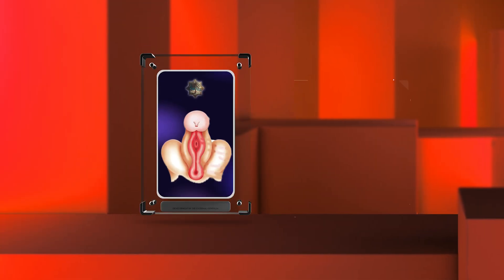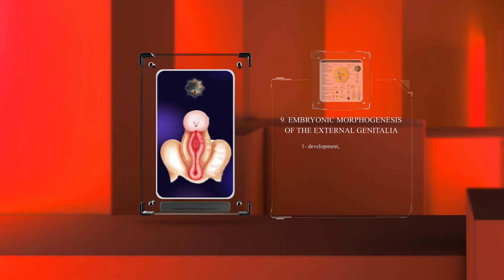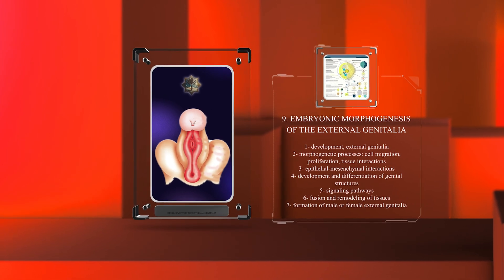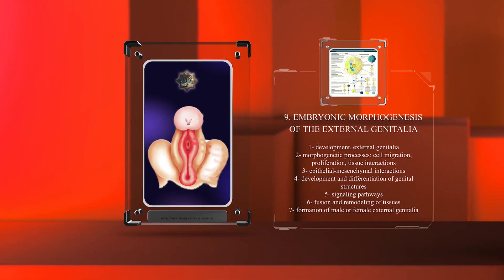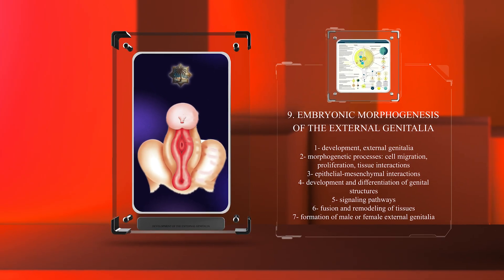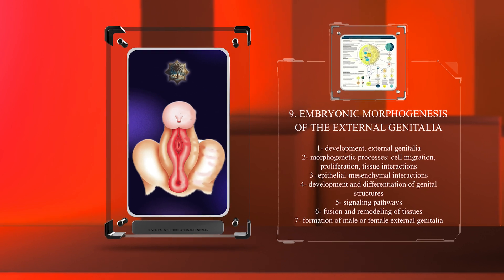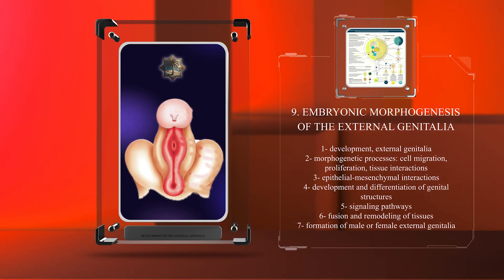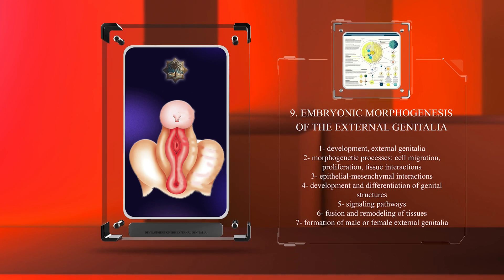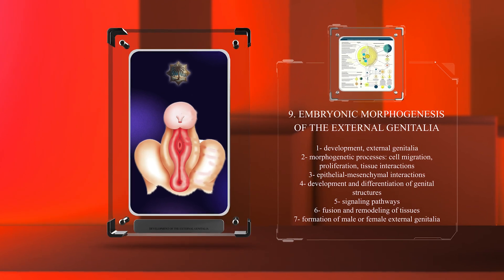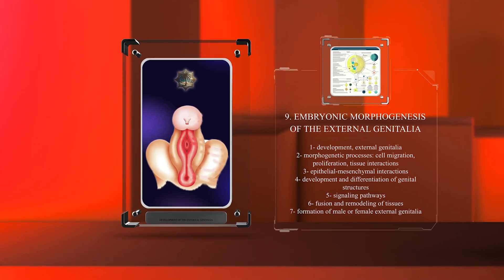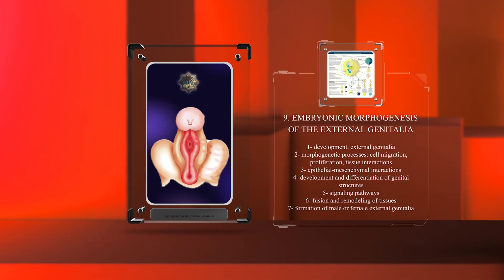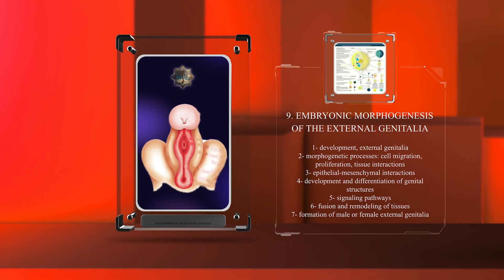The development of the external genitalia involves complex morphogenetic processes, including cell migration, proliferation, and tissue interactions. Epithelial-mesenchymal interactions play a crucial role in guiding the development and differentiation of the genital structures. These interactions involve intricate signaling pathways that regulate the fusion and remodeling of tissues, resulting in the formation of the male or female external genitalia.